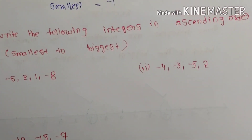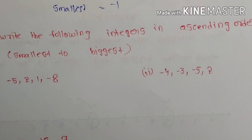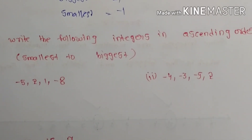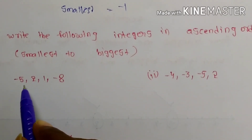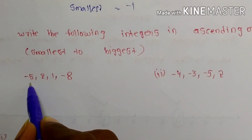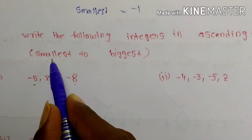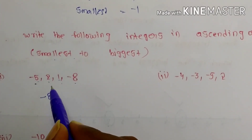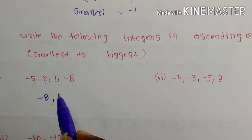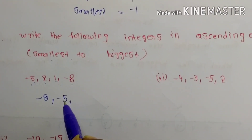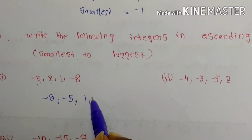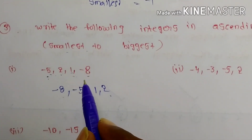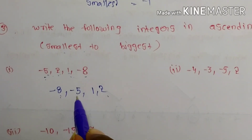Next question: write the following integers in ascending order. Ascending order means smallest to biggest. Given numbers: minus 5, 2, 1, minus 8. Check which is smallest: minus 8 is smallest, then minus 5, then 1, then 2. So the ascending order is: minus 8, minus 5, 1, 2.